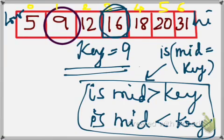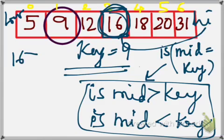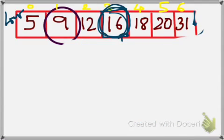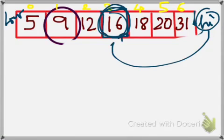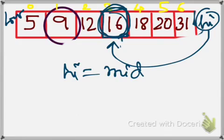If the mid is greater than key, it changes high to mid. In this example, the mid before was 16. But we can see that mid is greater than 9 since 16 is greater than 9. So a simple change takes place. This high is changed to mid. So the new mid, the new high is mid.